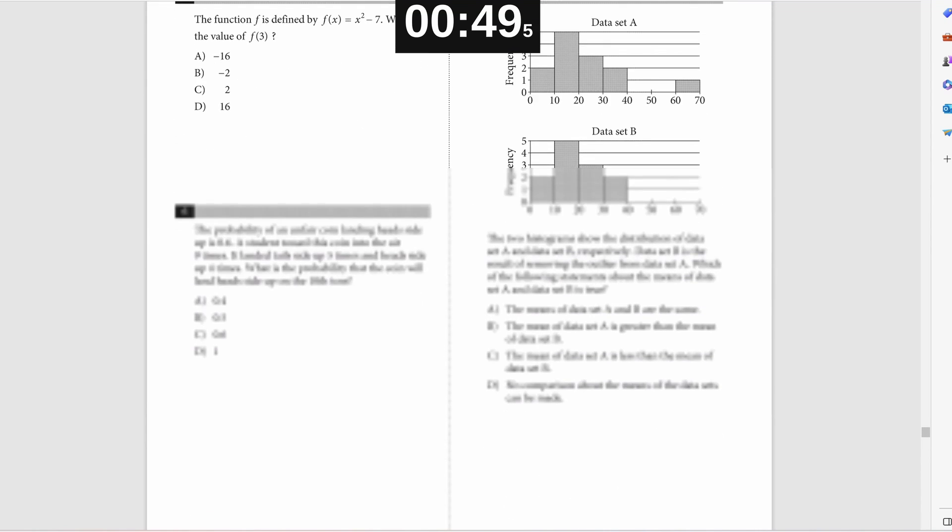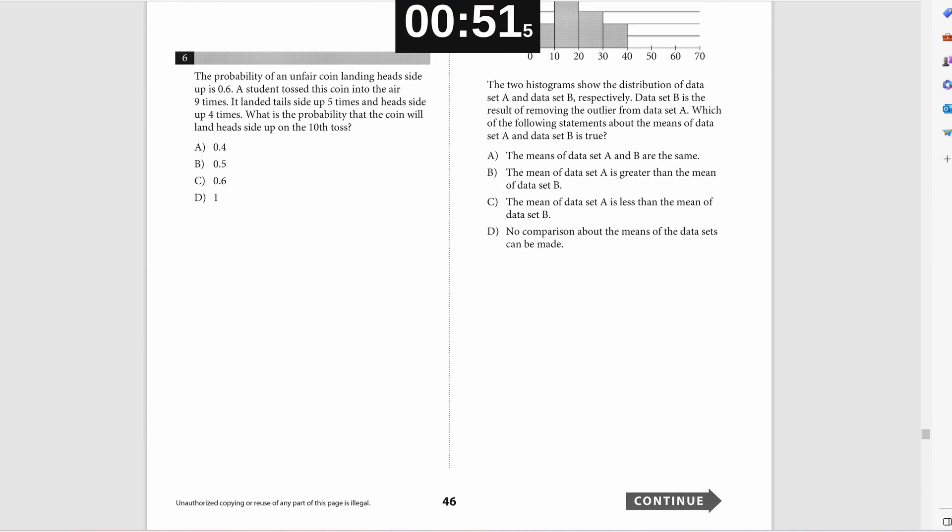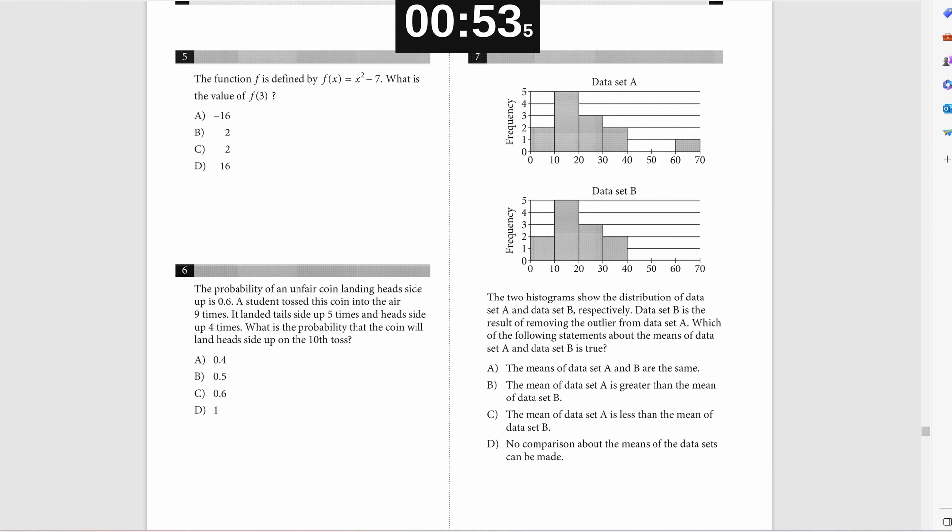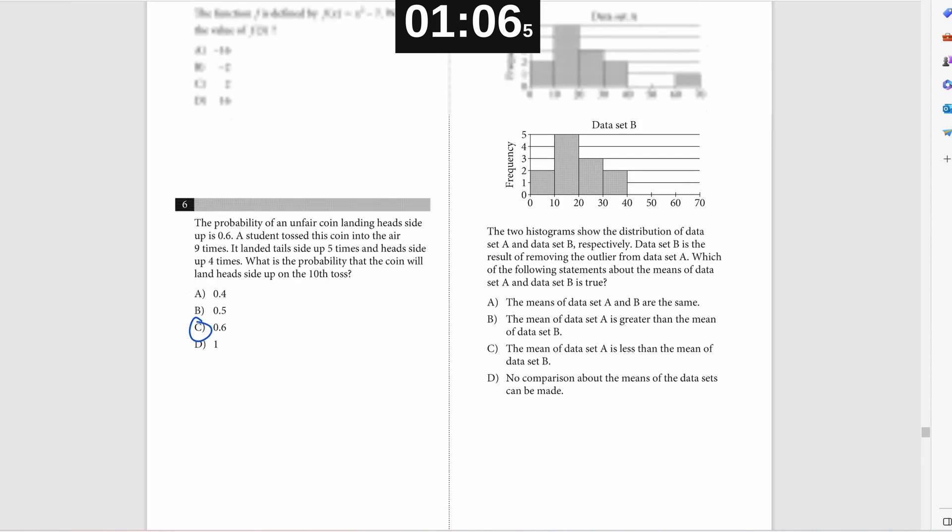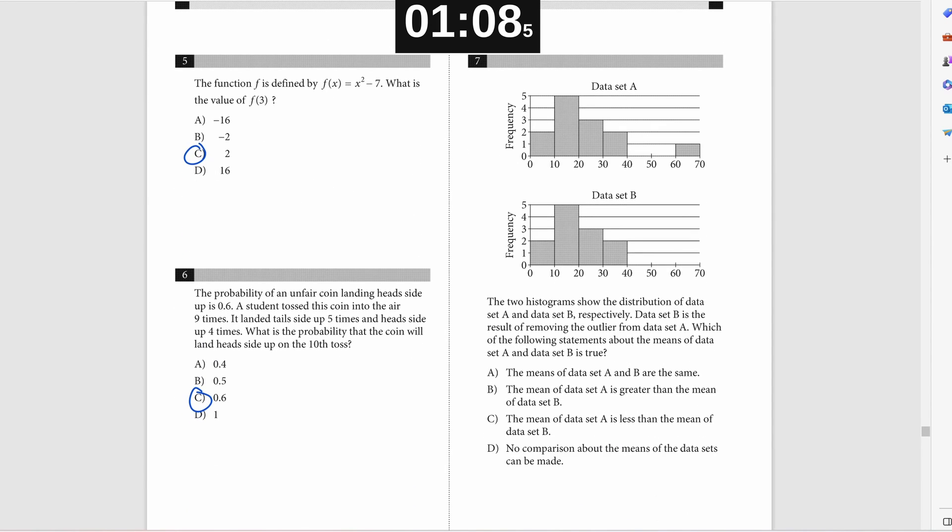Number five, you just plug three into the function and solve for f of x. Number six is kind of weird. They say you have a coin that has a 0.6 probability of landing heads. And it's saying on your 10th toss, what's the probability of landing heads? It would be 0.6. It doesn't change.